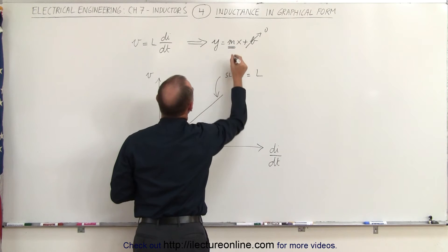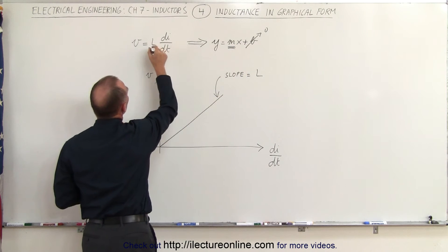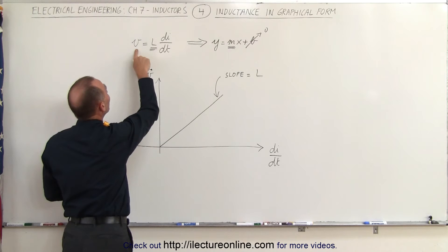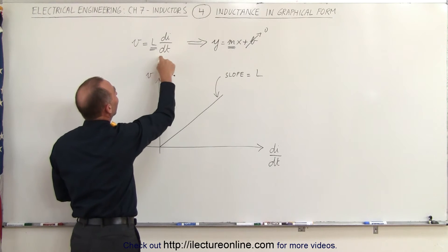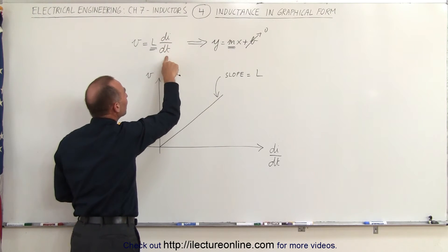Since M is the slope here, that indicates that L would be the slope of this equation. V would be the dependent variable, and di/dt would represent the independent variable.